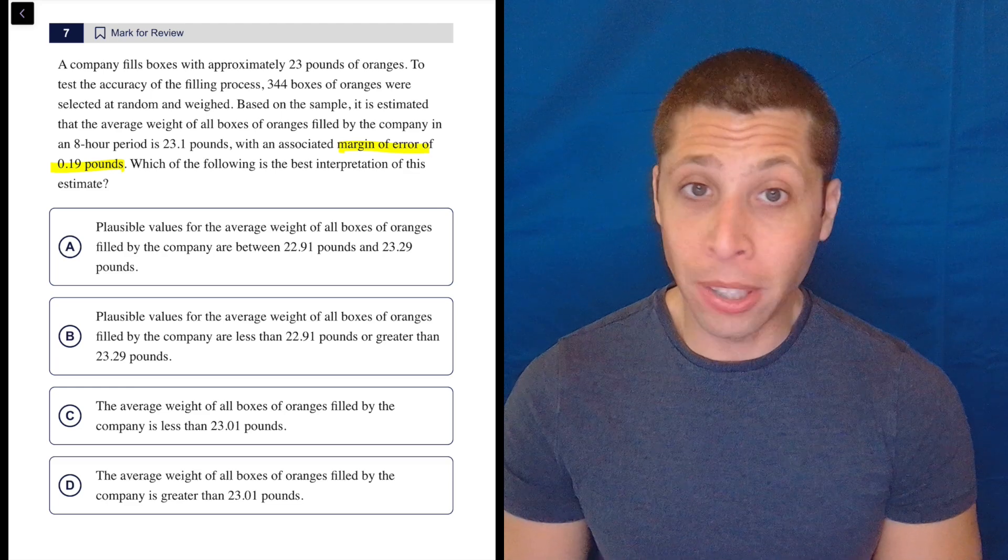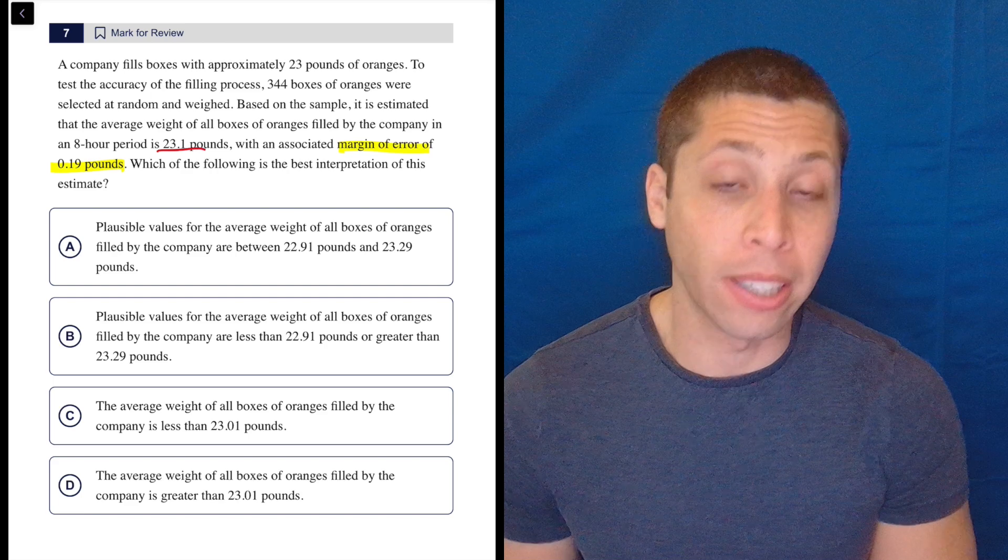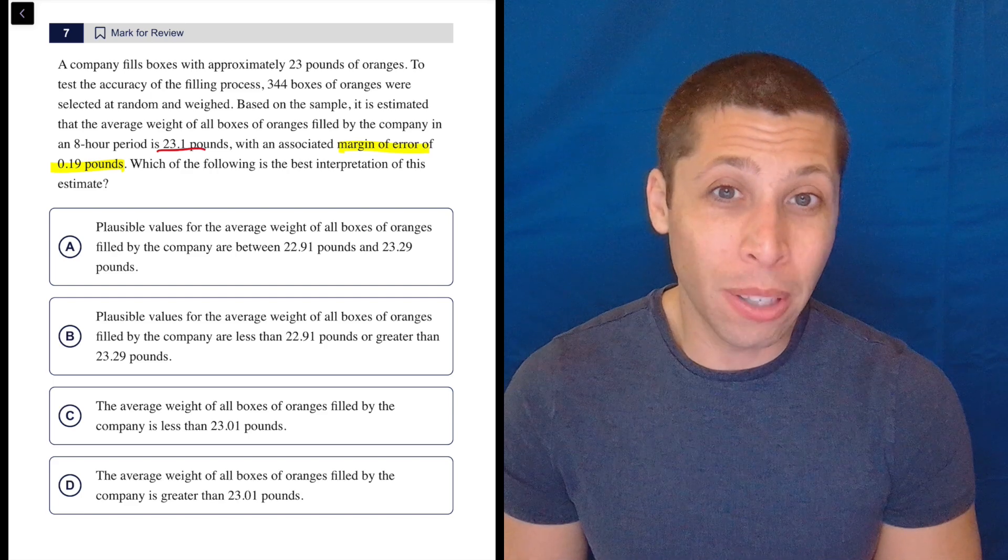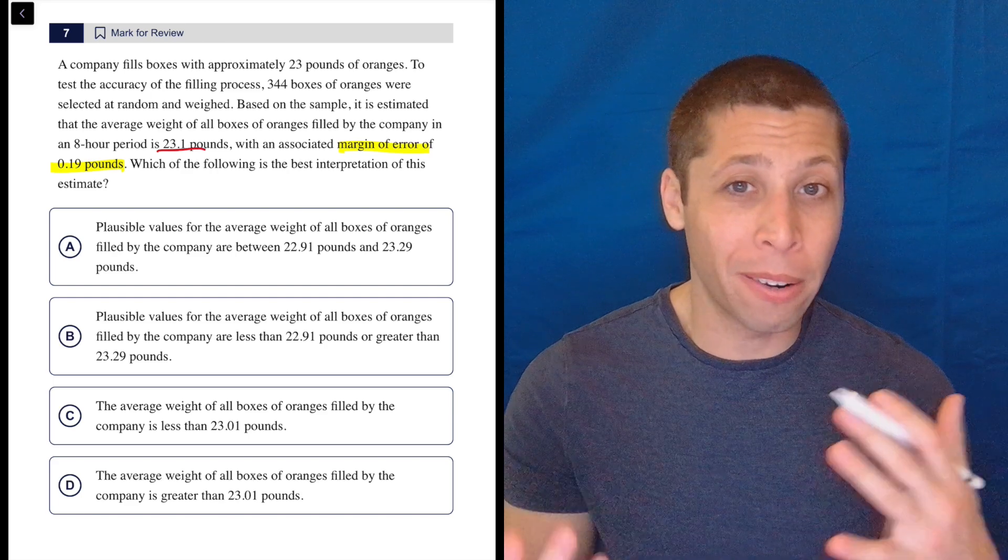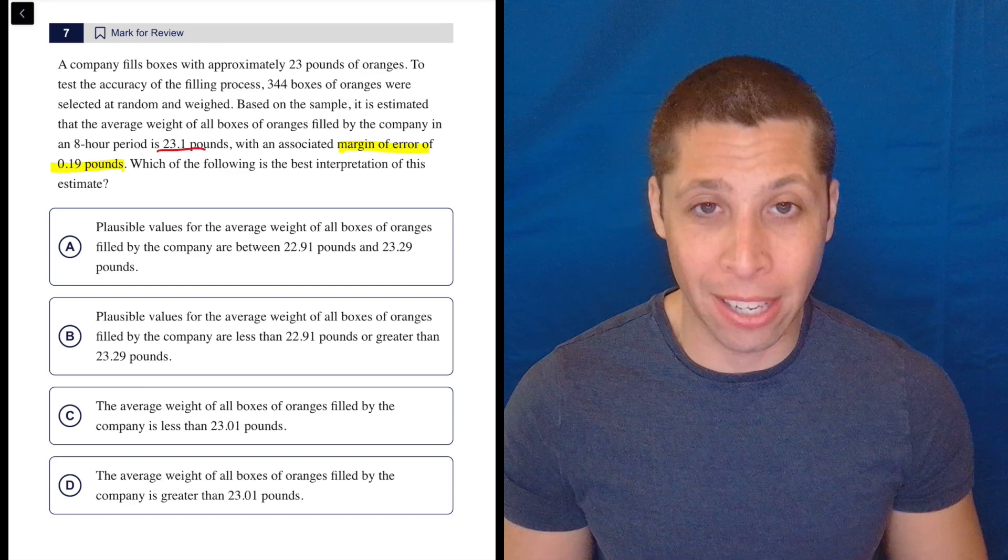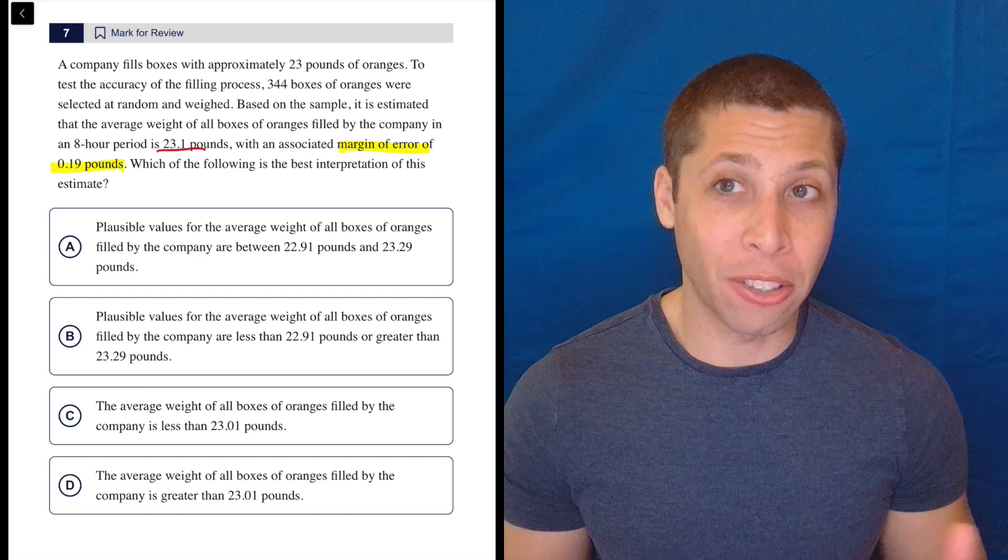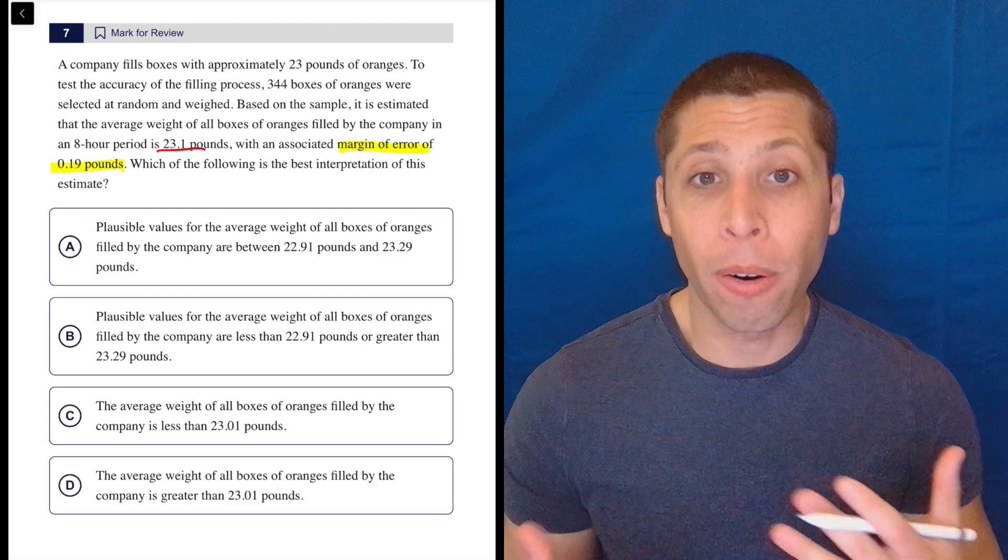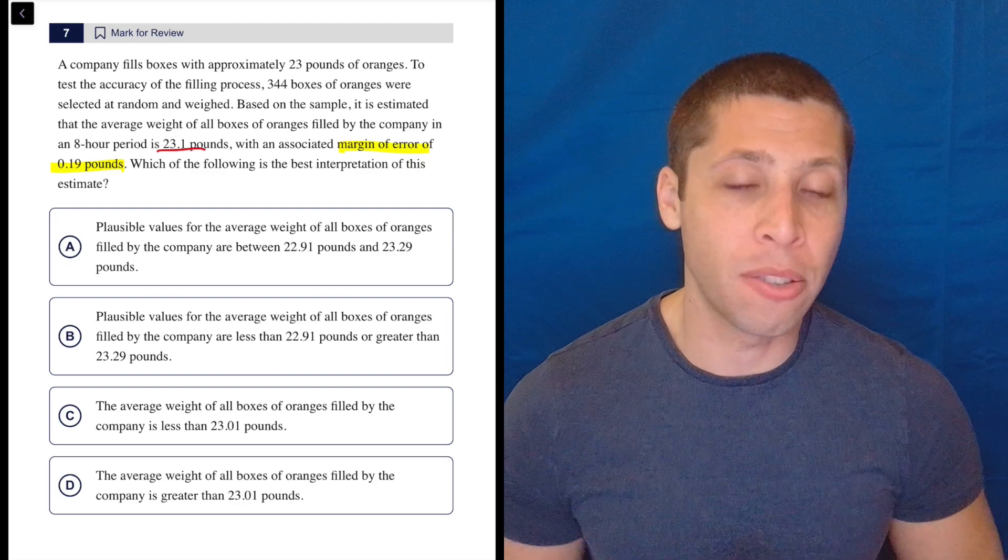So dumb summary version of margin of error, right, is we have an average. We have some sort of calculation, but it could be wrong. And there's statistical ways of figuring out where we might actually have an answer. So basically, our estimate could be off. Margin of error is giving us a range of possibilities where the real value probably lies. Not necessarily, but probably is within that range.